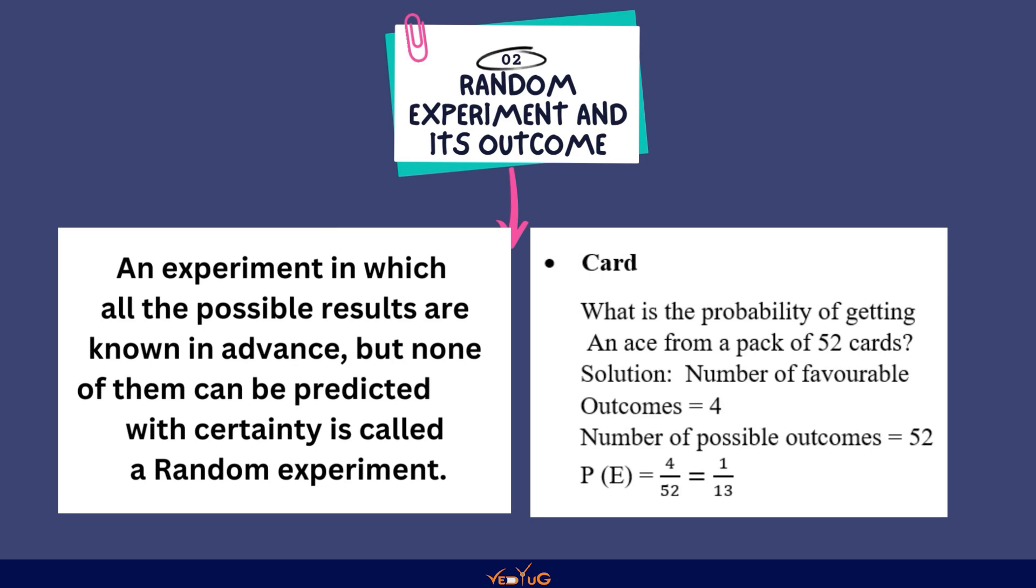Example, random experiment का cards होता है. यहाँ पर दिया गया है question में, what is the probability of getting an ace from a pack of 52 cards. आप solution देख सकते हैं, तो हमें probability of event मिलता है solve करके 1 by 13.